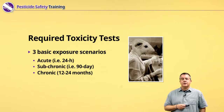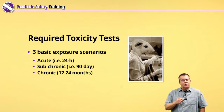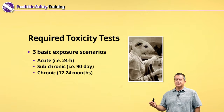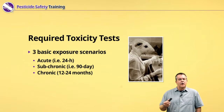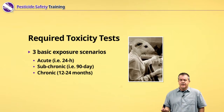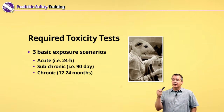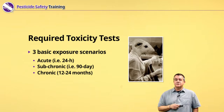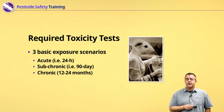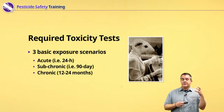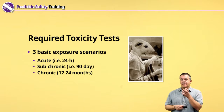Subchronic would be a longer exposure, like a 90-day exposure. And chronic exposures are long-term exposures, something longer than a year. Now these numbers, these dates, they're not hard and fast. But keep in mind these three different time frames — acute, subchronic, and chronic — they describe exposures.